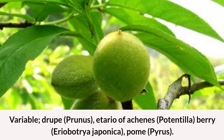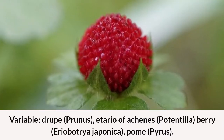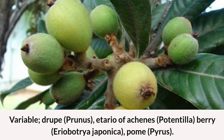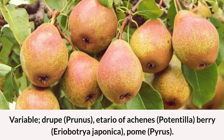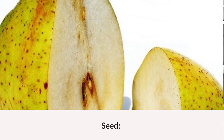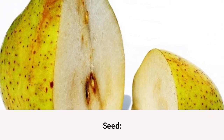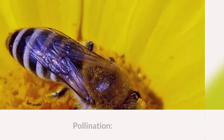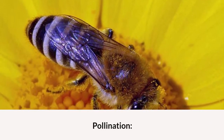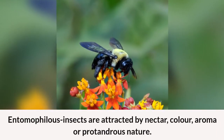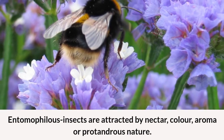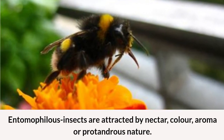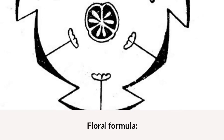Fruit: variable — drupe (Prunus), etaerio of achenes (Potentilla), berry (Aerobotria japonica), pome (Pyrus). Non-endospermic. Pollination: entomophilous — insects are attracted by nectar, color, aroma, or the nectariferous nature of the flower.